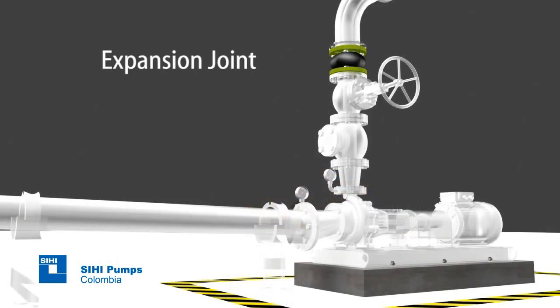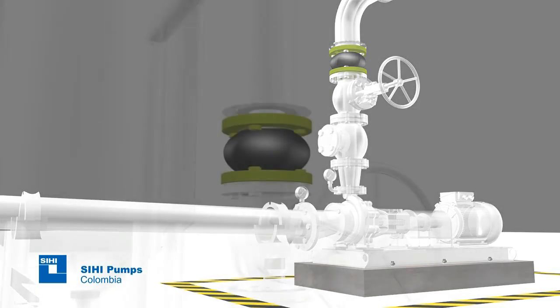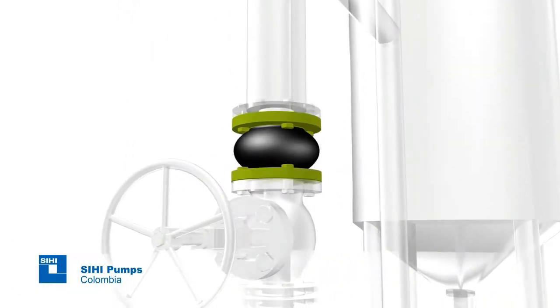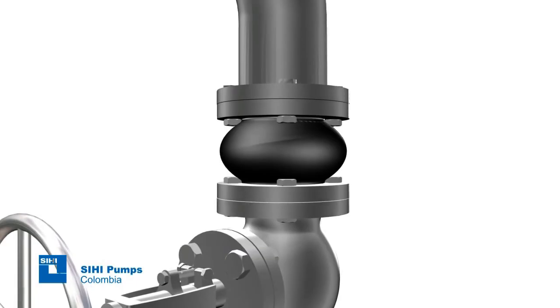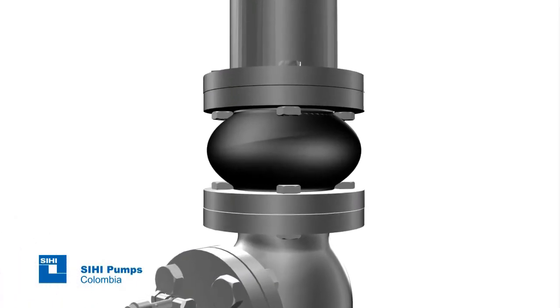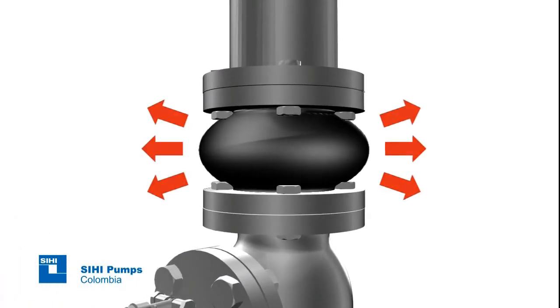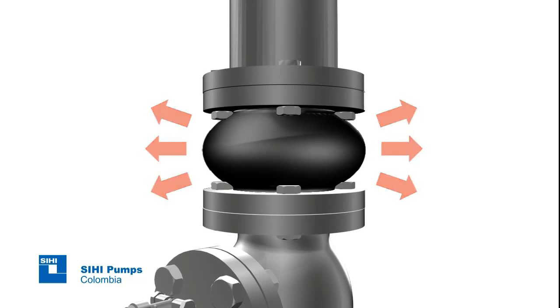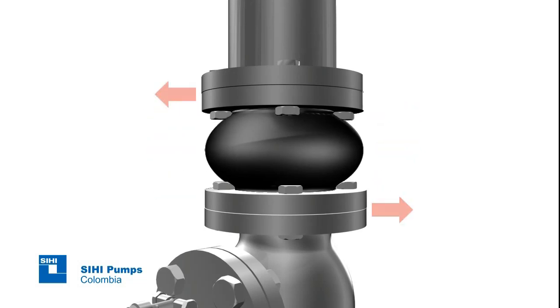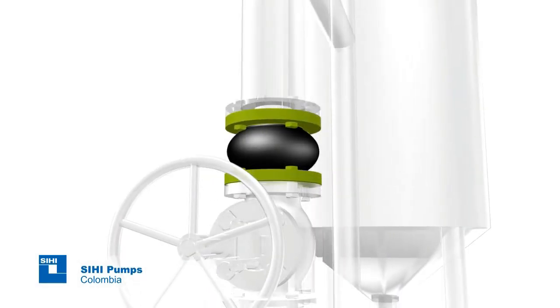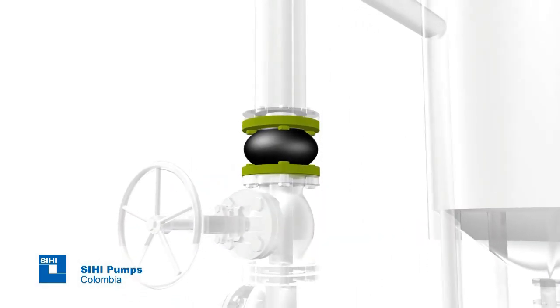Expansion joint: Whenever pumping liquids at high temperatures and when there is certainty of vibrations or piping misalignments, this type of joints shall be installed since they help to absorb movement due to thermal expansion or vibration in the piping, therefore avoiding an additional burden on the pump flanges.